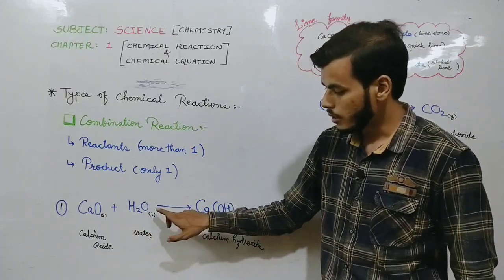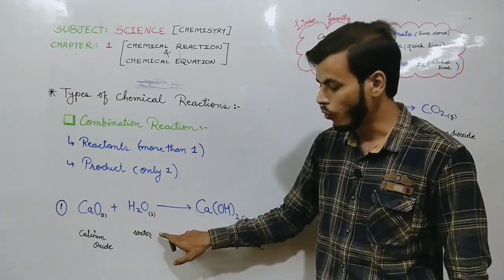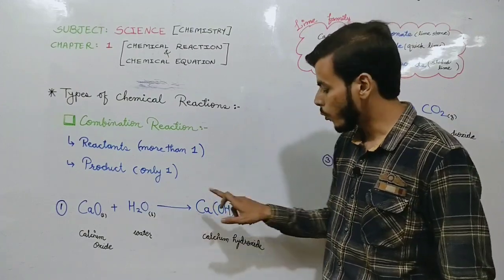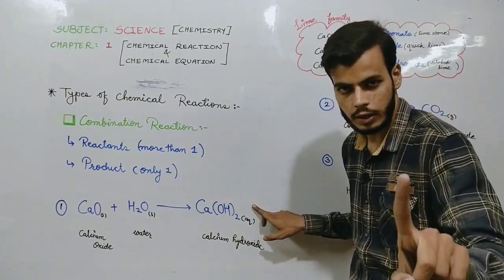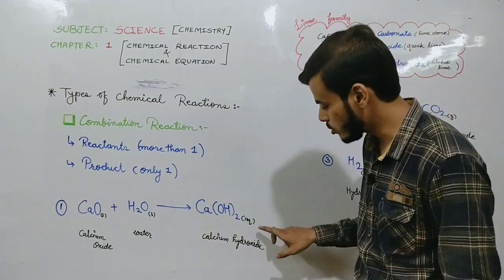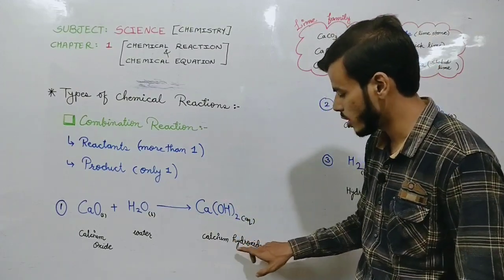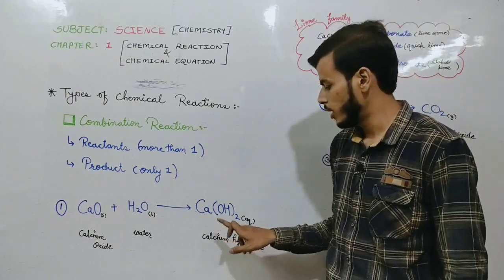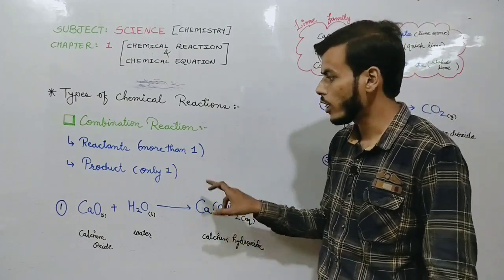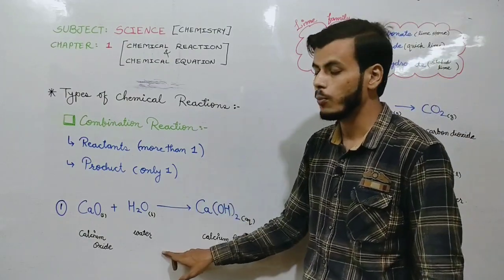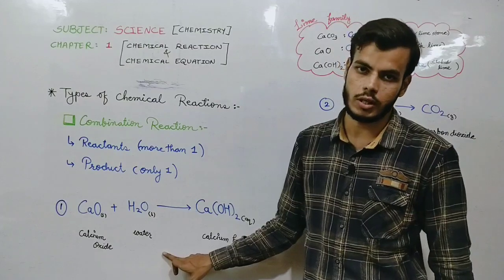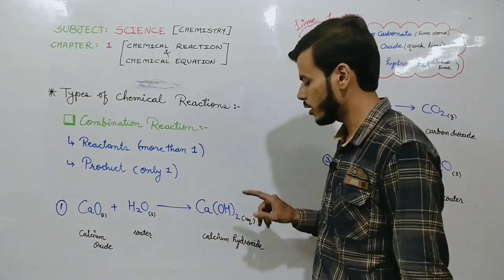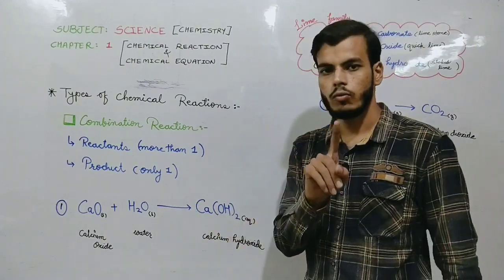So this is combination reaction. Here the reactants are 2 — calcium oxide, often known as quick lime, reacted with water. And how many products were formed? Just only one — calcium hydroxide, also known as slack lime. So this is the type of combination reaction: more than one reactant, and product only one.